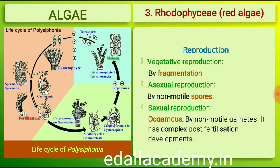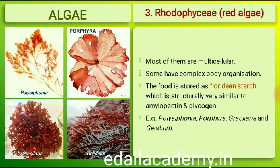The red algae usually reproduce vegetatively by fragmentation. They reproduce asexually by non-motile spores and sexually by non-motile gametes. Sexual reproduction is oogamous and accompanied by complex post-fertilization developments. The common members are Polysiphonia, Porphyra, Gracilaria and Gelidium.